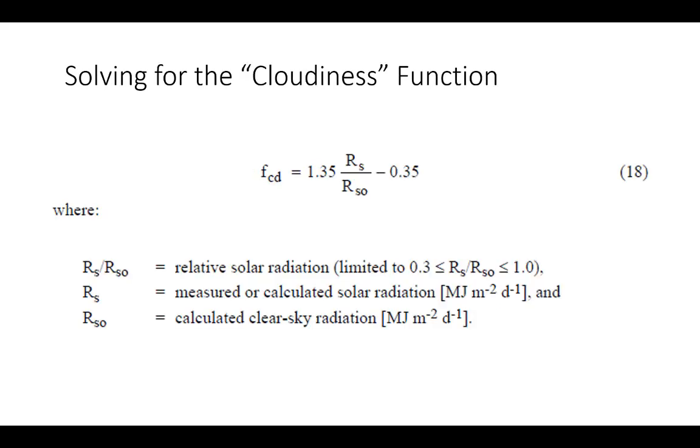The cloudiness function is empirical, and it's based on the radiation measured at the weather station divided by what's called clear sky radiation. That is a modeled value of what the weather station would have recorded if there hadn't been a cloud in the sky. If it's a perfectly clear day, this ratio will be close to one. If it's a really cloudy day, it's going to be much less than one. What we have to do is calculate clear sky radiation RSO.